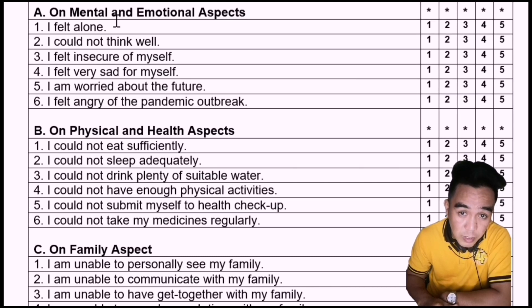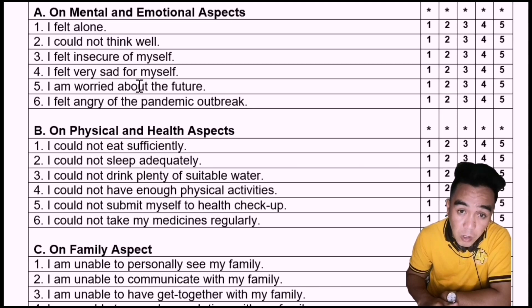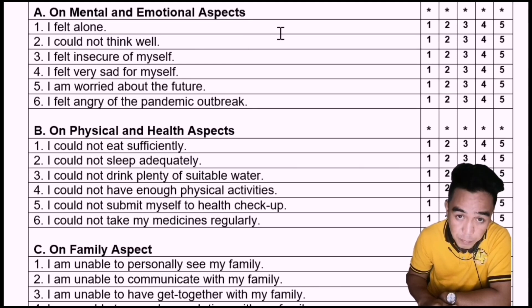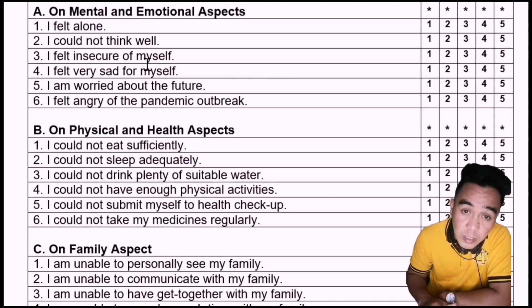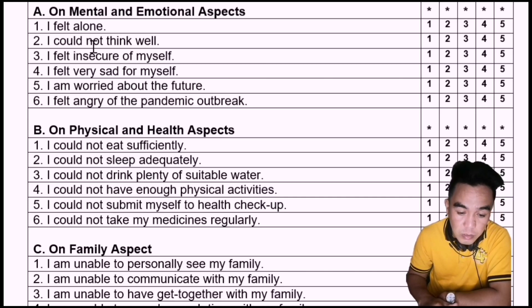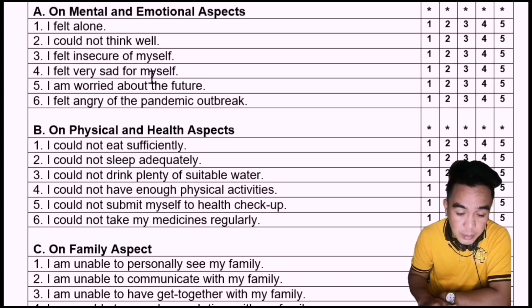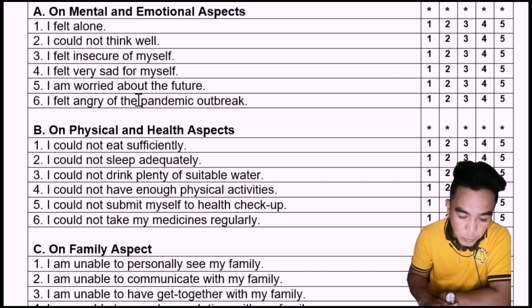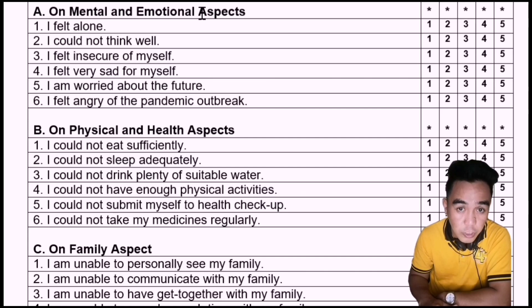For the mental and emotional aspects, the items include: I felt alone; I could not think well; I felt insecure of myself; I felt very sad for myself; I am worried about the future; I felt angry of the pandemic outbreak. If we evaluate and assess all these items, we can confirm they belong to this group or category.